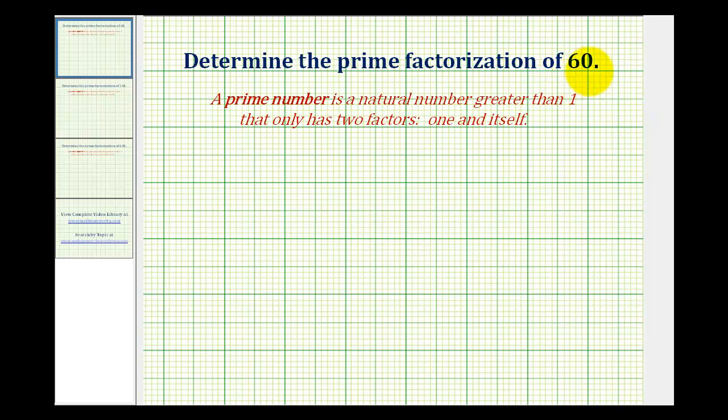We want to determine the prime factorization of 60, which means we want to determine the prime numbers that when we multiply them, we get 60.